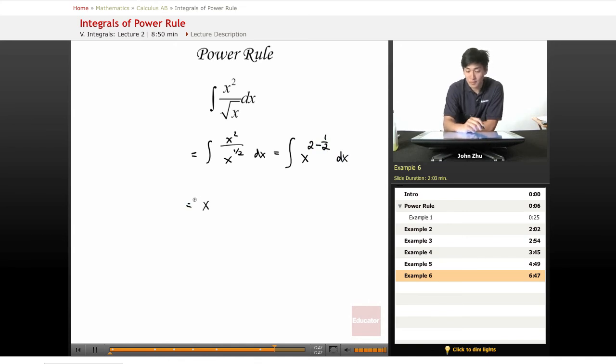Which equals x to the 4 over 2 minus 1 over 2 dx, which equals the integral of x to the 3 over 2 dx. So now, in this form, we can finally take the power rule.